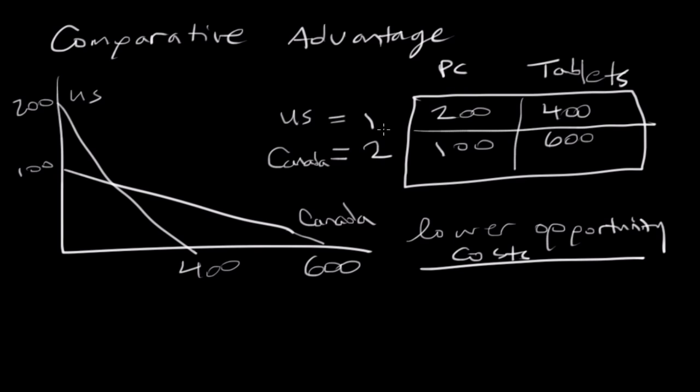The way to think about this is by thinking about if I weren't to produce PCs, how many tablets could I make. When you think about this mathematically, that would be 400 tablets divided by 200 PCs, which is equal to 2. What this tells us is that two tablets is equal to one PC for the U.S. That makes sense, because if we were to take this one PC and put it towards tablets, we could create two tablets. If we were to fully create only PCs, we would create 200. However, if we were to allocate all of our efforts towards creating tablets, then we would be able to create 400.